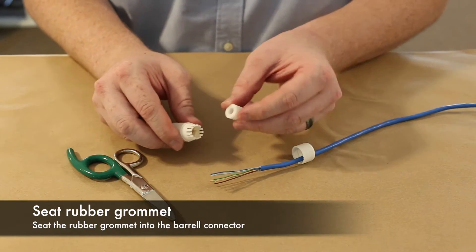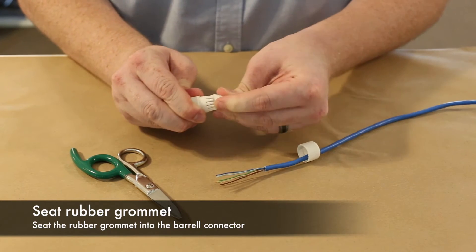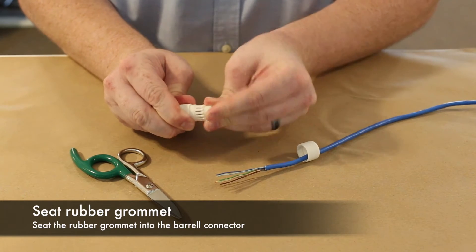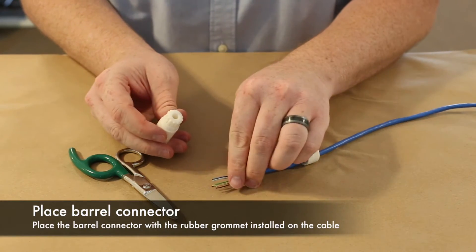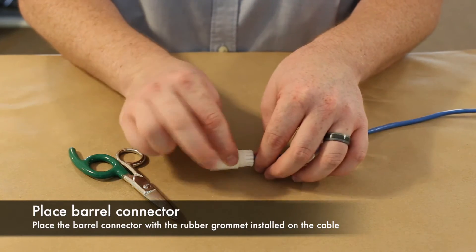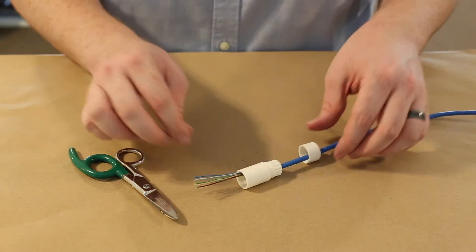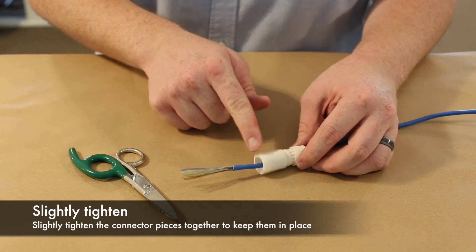Then I'm going to seat the rubber grommet inside the barrel connector. And then I'm just going to slightly tighten these two pieces together so it will stay in place.